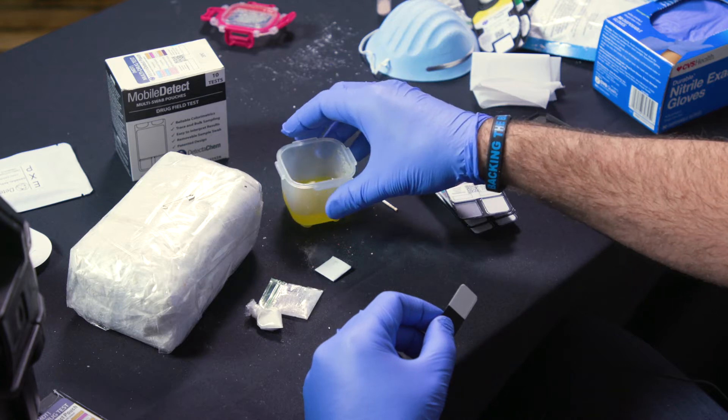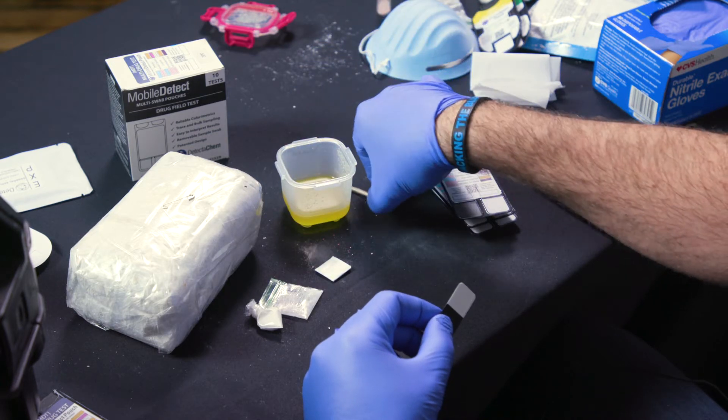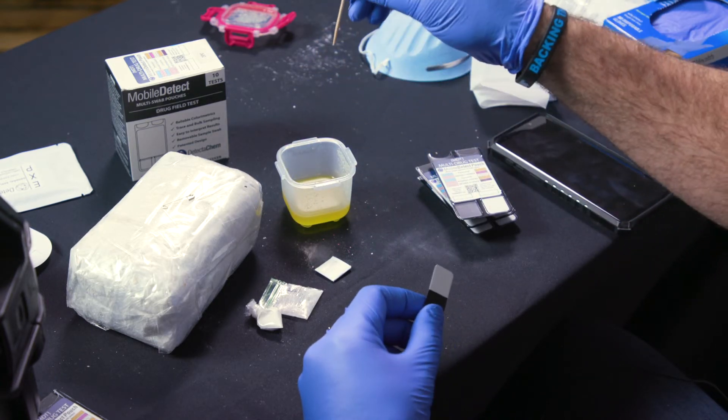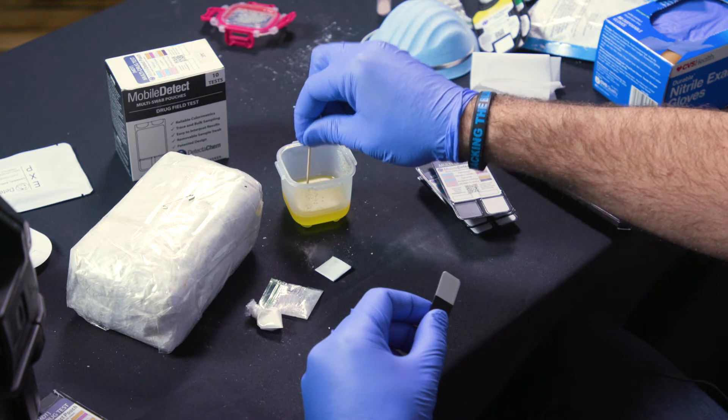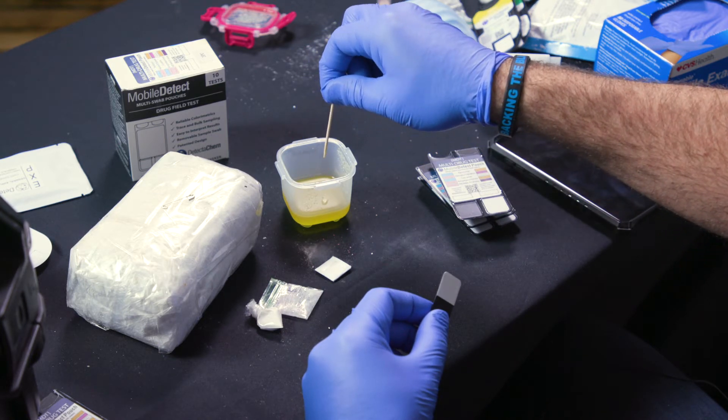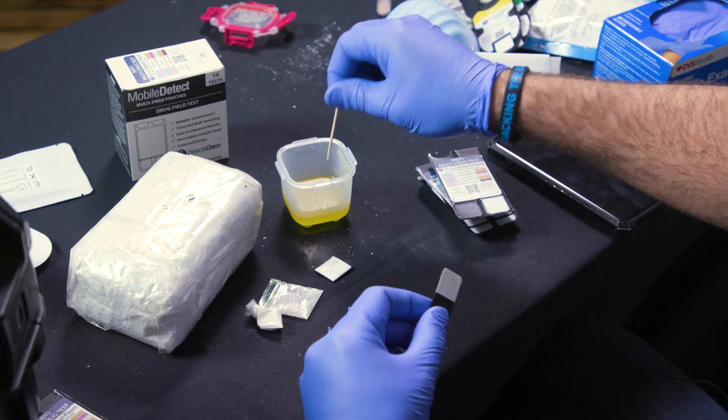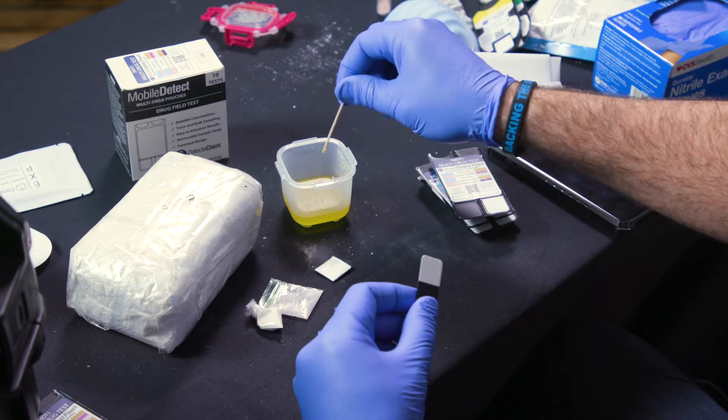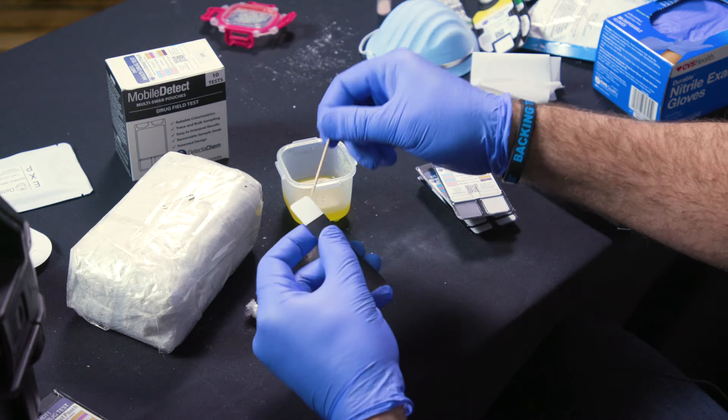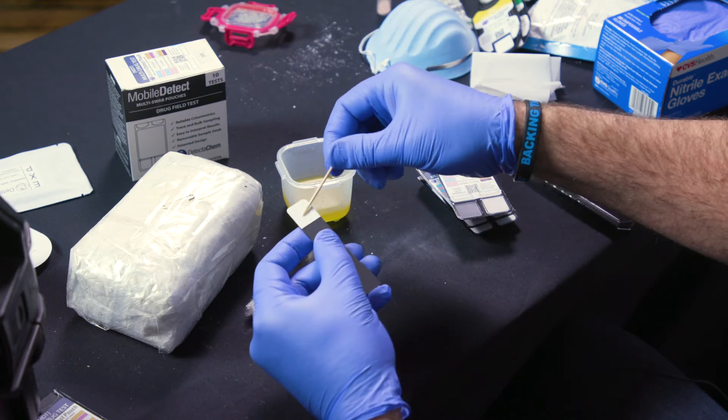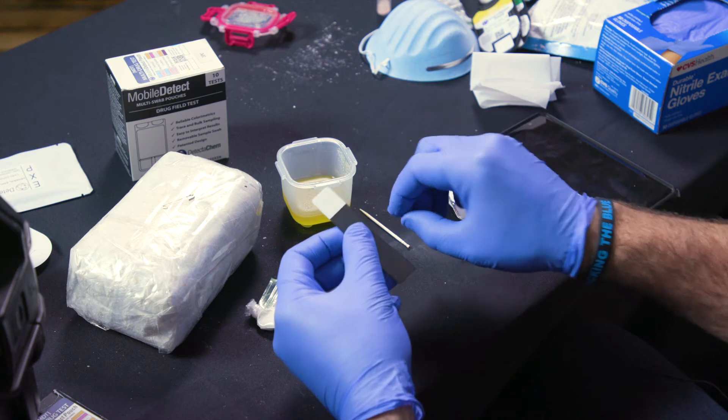Dab, shatter, even vape pen fluid, toothpick, cotton swab, whatever it may be, and this would be the same for a final reaction in a one-pot meth cook with the Coleman fuel. Just something that you can just get a little bit of the liquid on there. Wipe that liquid on the pad and that's all you have to do.